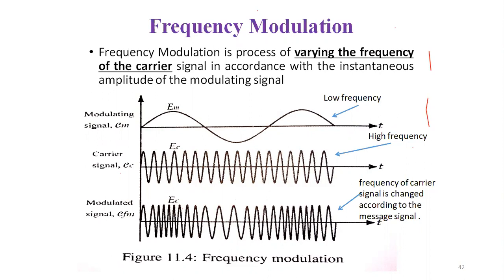For FM stations, the situation is different. FM is connected to the MHz range, and each FM station uses a channel bandwidth of 200 kHz, which is 0.2 MHz. This allows FM to transmit audio up to 20 kHz, making FM radio stations capable of much better sound quality.